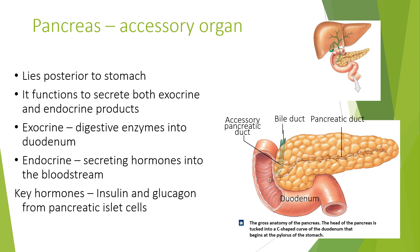Key hormones include insulin and glucagon from pancreatic islet cells. To recap: an endocrine gland secretes its products, for example hormones, directly into the blood. An exocrine gland secretes its products, for example enzymes, into ducts that lead to the target tissue.